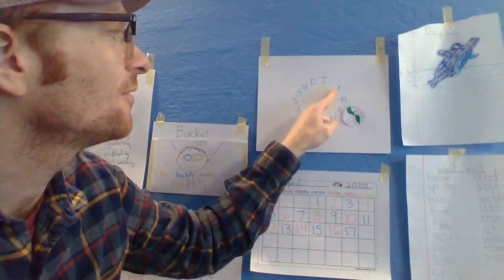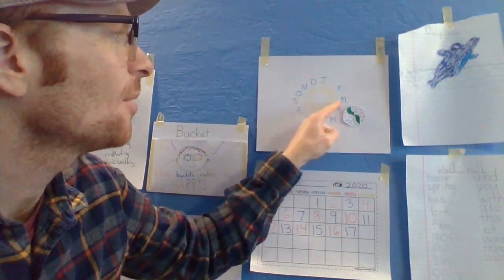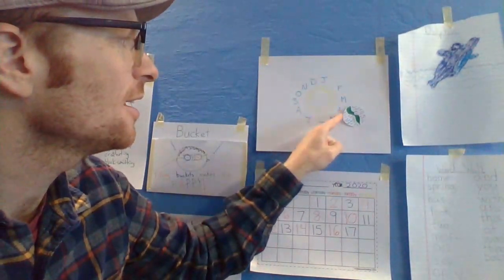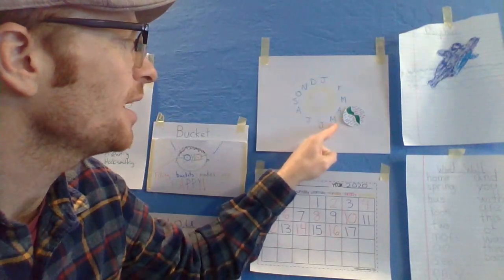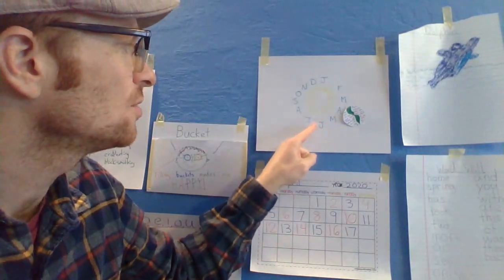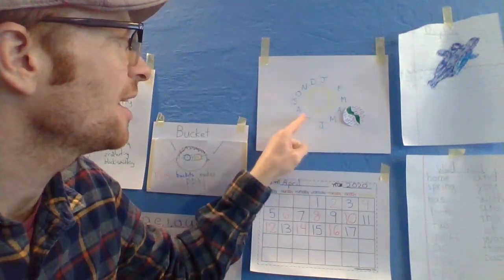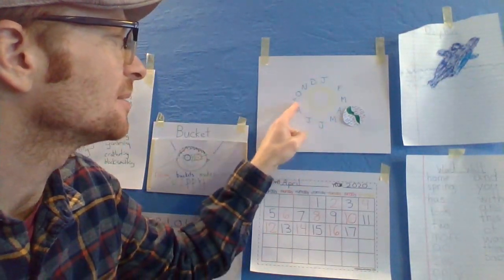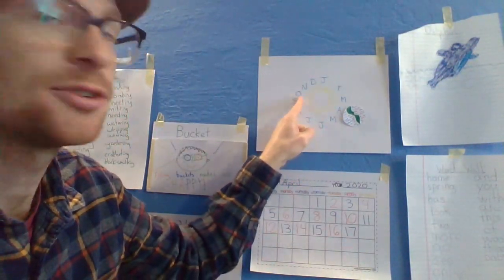January, February, March and April, May, June, July and August, September, October.